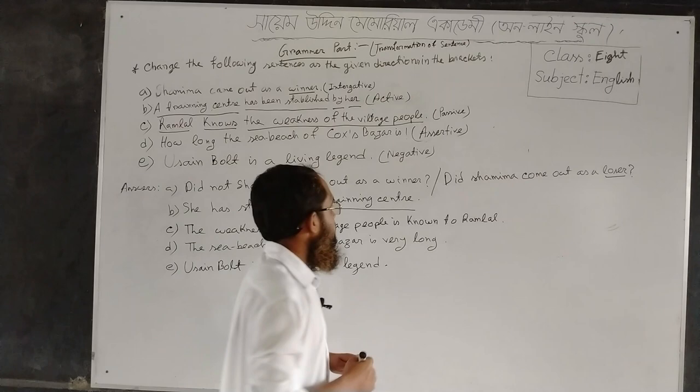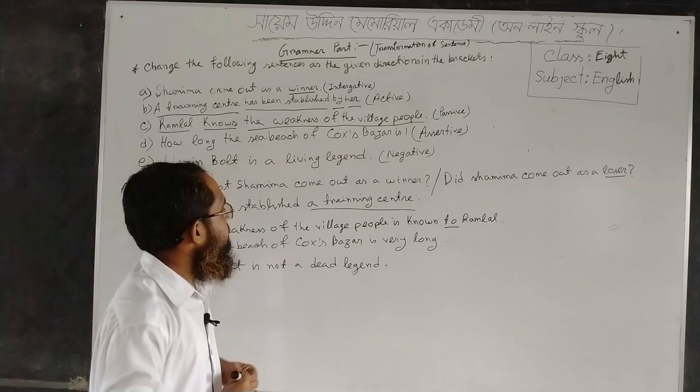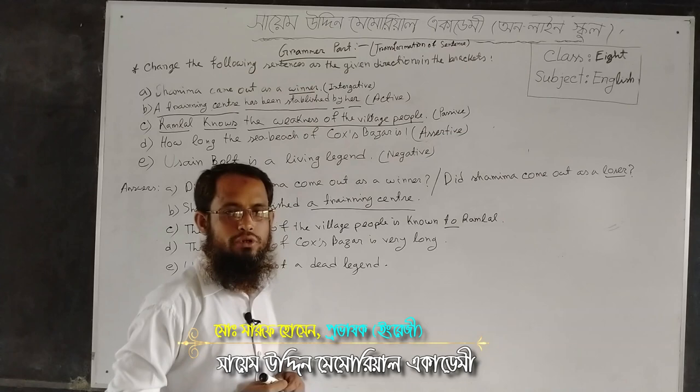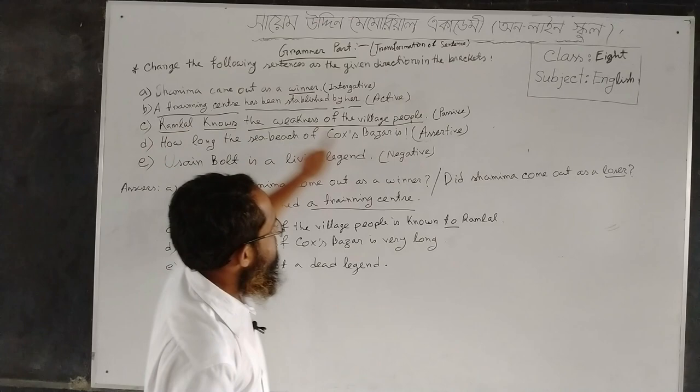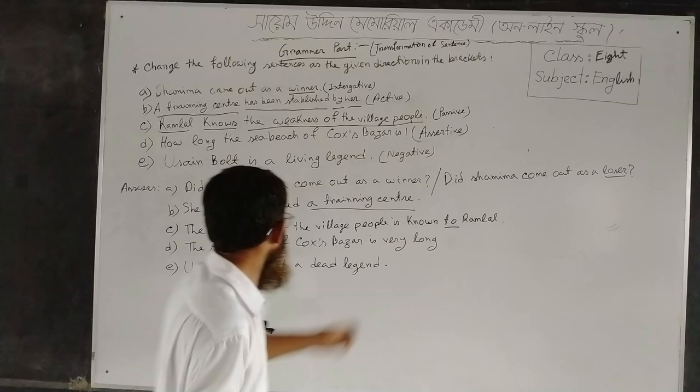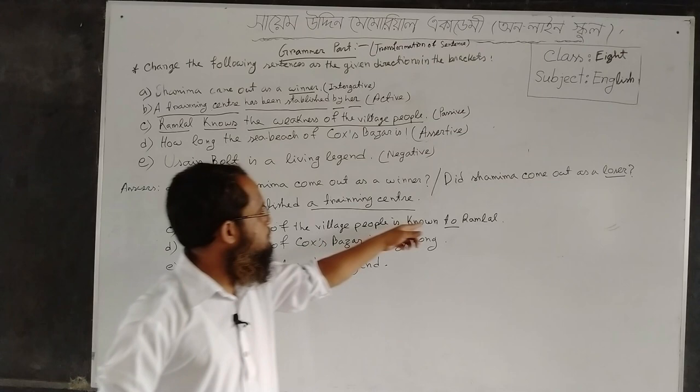You have to use the preposition 'to', then place the subject as an object. The answer goes: The weakness of the village people is known to Ramlal.